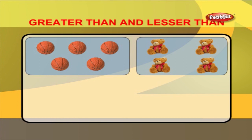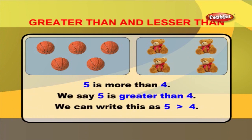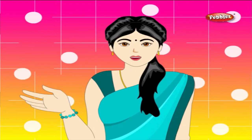Let us now compare these pictures. There are 1, 2, 3, 4, 5 balls and 1, 2, 3, 4 teddy bears. 5 is more than 4. In other words, we say 5 is greater than 4. We can write this as 5 greater than 4.